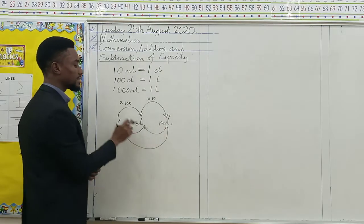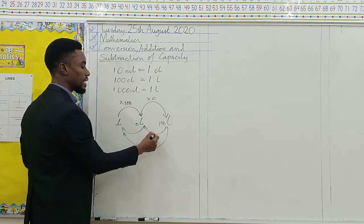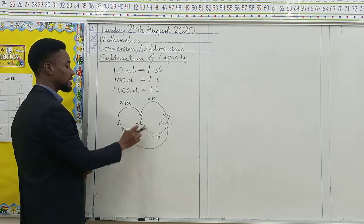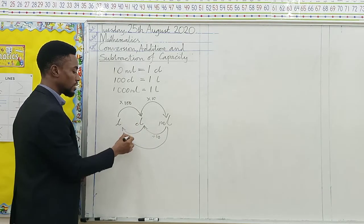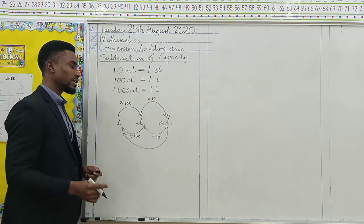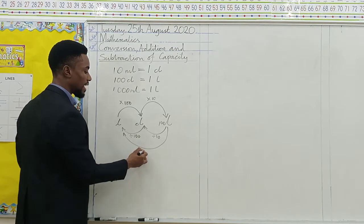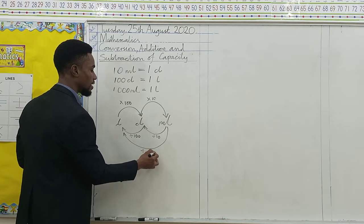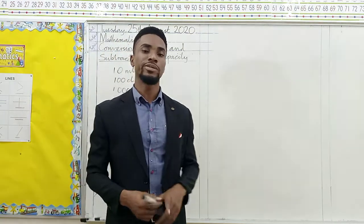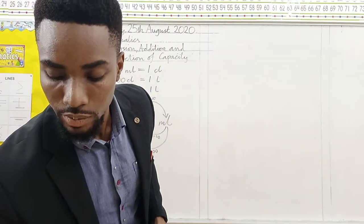If you are changing from milliliter back to centiliter, you divide by 10. If you are changing from centiliter back to liter, you divide by 100. And finally, if you are changing from milliliter to liter, you divide by 1,000. Now let's see if we can use this to solve some problems.